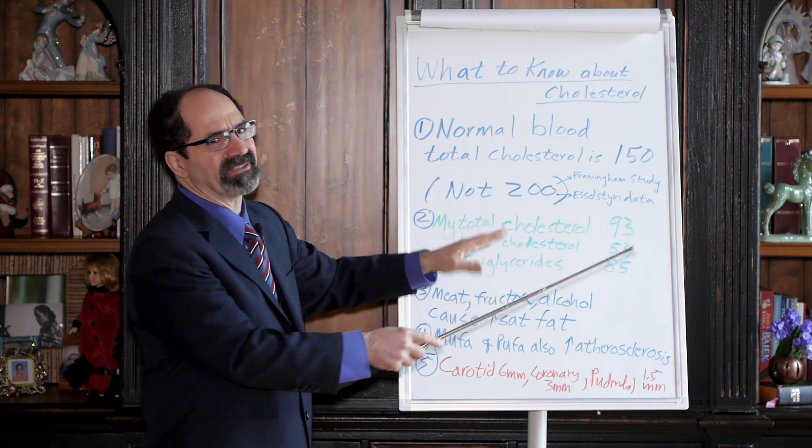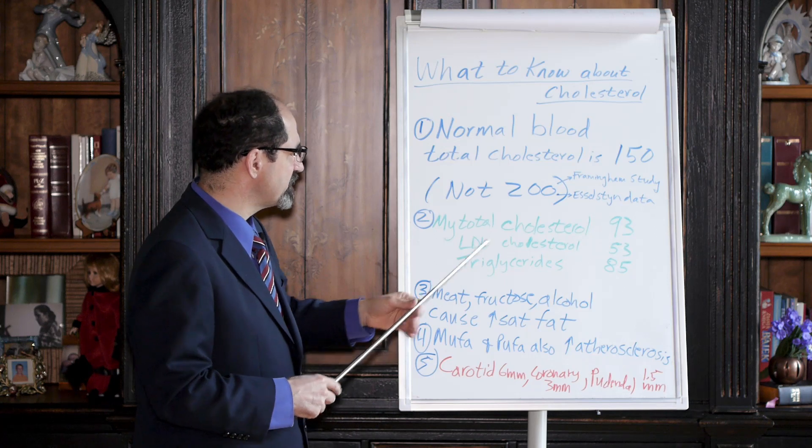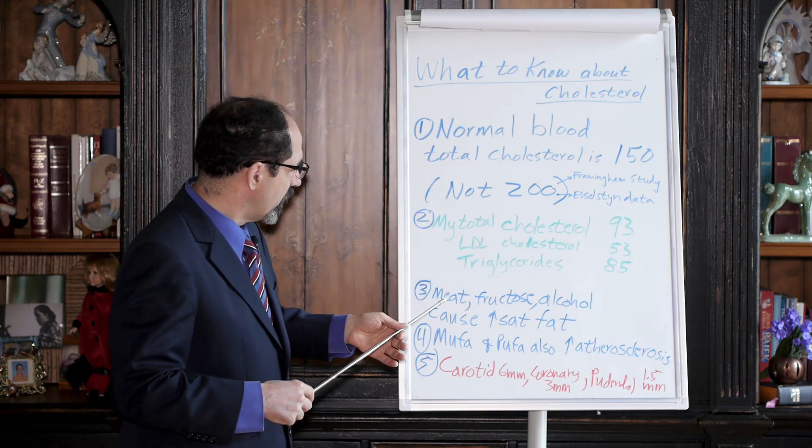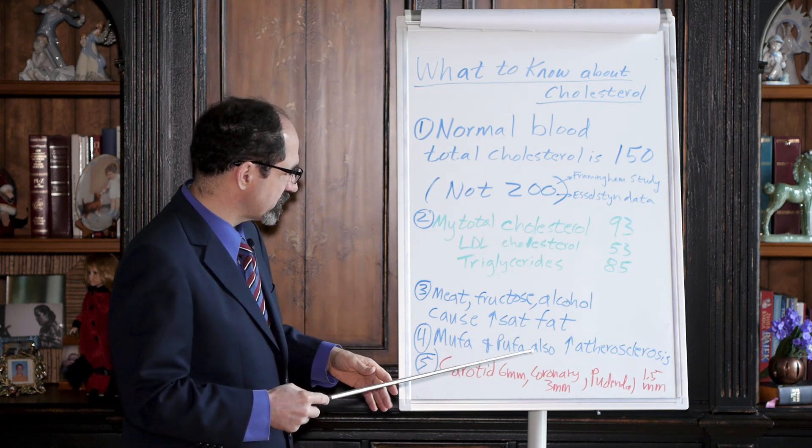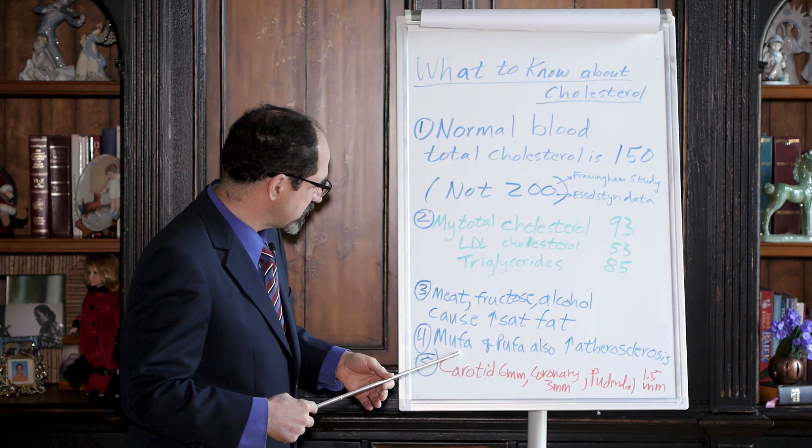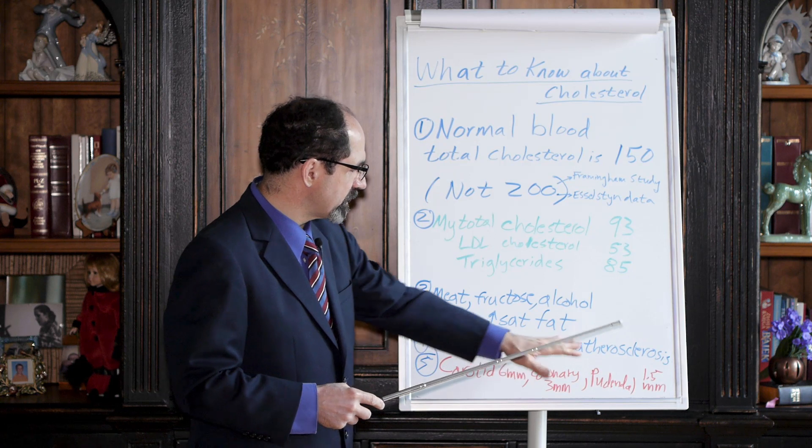These are again the kind of numbers you get on a plant-based diet. You never get these numbers if you're eating meat and oil and junk food. These numbers are about as good as you'll ever hear in your life. These are all the things that cause atherosclerosis: increased saturated fat causes atherosclerosis—even monounsaturated fatty acids and PUFAs also increase risk of atherosclerosis.